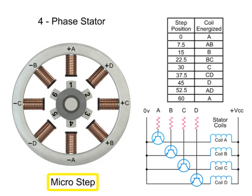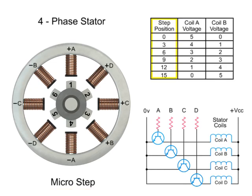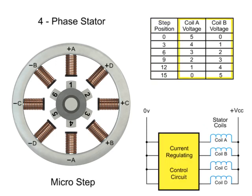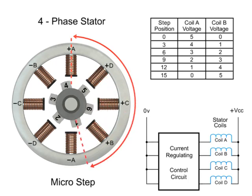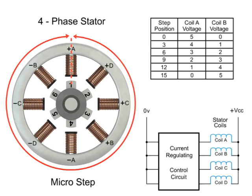Micro-stepping controls the current in the motor winding to a degree that further subdivides the number of positions between poles. To achieve micro-steps, the coils are only partially energized. As we apply a maximum voltage of 5 VDC to coil A and a minimum voltage of 0 VDC to coil B, rotor position 1 will line up. Reducing the voltage to coil A and increasing voltage to coil B, the rotor will begin to rotate in a clockwise direction and continue until the voltage is 0 at coil A and 5 at coil B. This process continues at all coils within the stator to provide accurate positioning. As you can see in this example, 120 steps are required to make a full rotation at 3-degree increments.